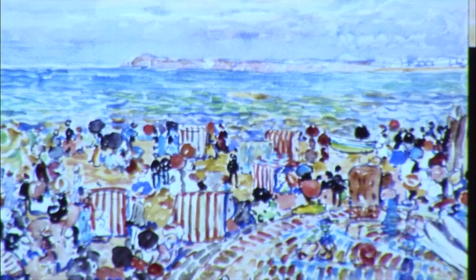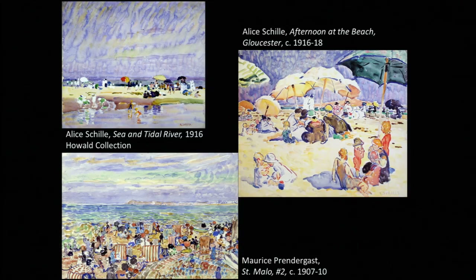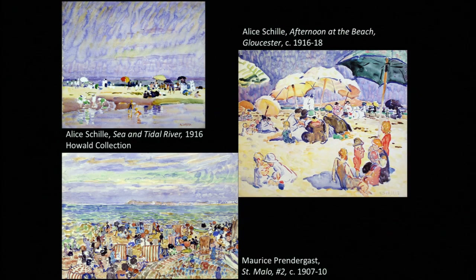What's interesting is the dialogue with Prendergast. Many people compare Schilly with Prendergast. Particularly when you look at Sea and Tidal River and San Malo, they're quite related. But when you look at Afternoon at the Beach, it's very different—similar palette, use of pointillism, but much more storytelling and interest in the figure, with a stronger sense of design oriented around ellipticals, with echoing round forms of umbrellas and groupings of figures. That's very much Alice Schilly.